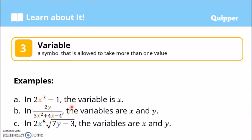Variables are commonly written as alphabet letters from a to z, but the most commonly used are x and y. In 2x to the power of 5 times the square root of 7y minus 3, the variables used are x and y.